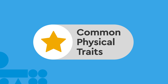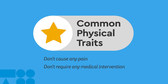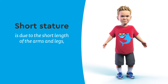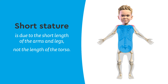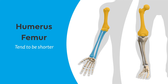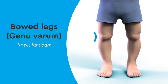As a new parent or caregiver, it's helpful to understand the normal, common physical traits of achondroplasia. Typically, these traits don't cause any pain and don't require any medical intervention. The average height for women is 4'1" or 124 centimeters, and around 4'3" or 130 centimeters for men. The short stature is mainly due to the shorter length of the arms and legs, not the length of the torso. Typically, the bones of the upper arm and upper leg, called the humerus and femur, tend to be shorter than the bones of the forearm and lower leg — an appearance known as rhizomelia. Some people may have bow legs, called genu varum, where the knees are farther apart than they typically should be. This is usually benign in the majority of cases.